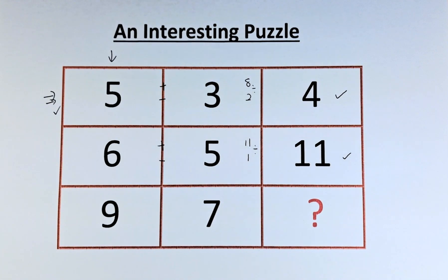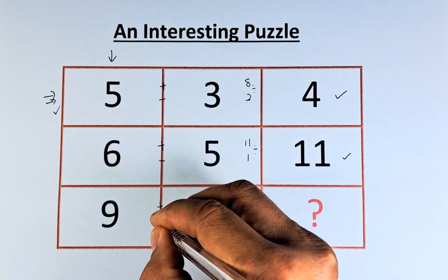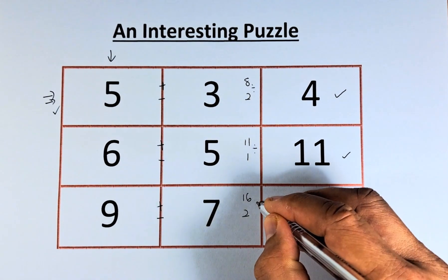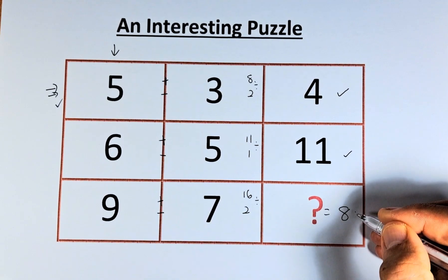You should know the way now. 9 plus 7 is going to be 16. 9 minus 7 is going to be 2. 16 divided by 2. And the question mark is going to be 8.